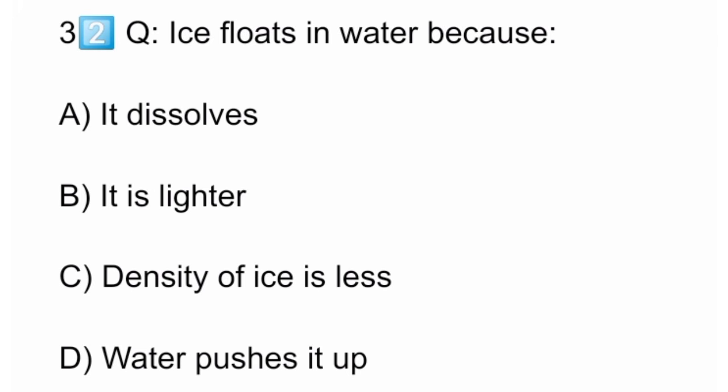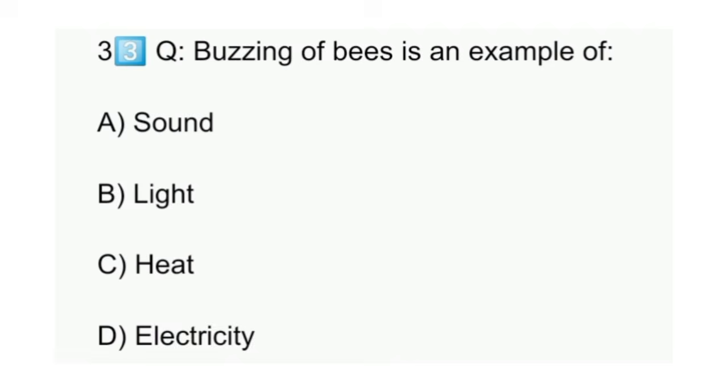Thirty-two: Ice floats in water because. Thirty-three: Buzzing of bees is an example of.